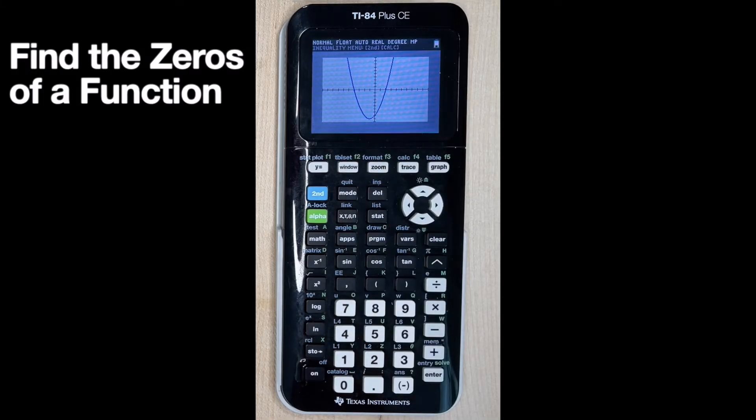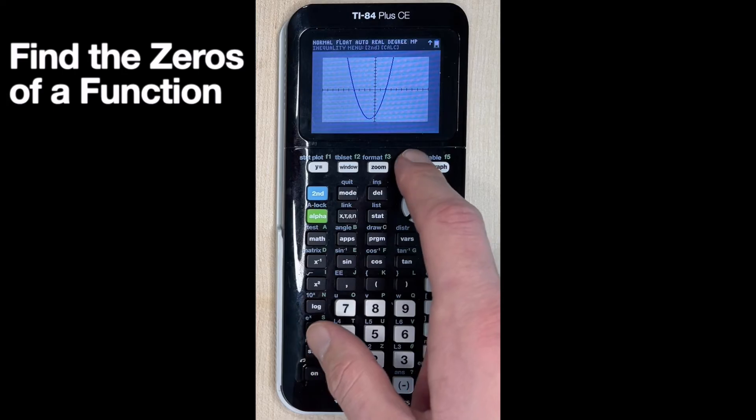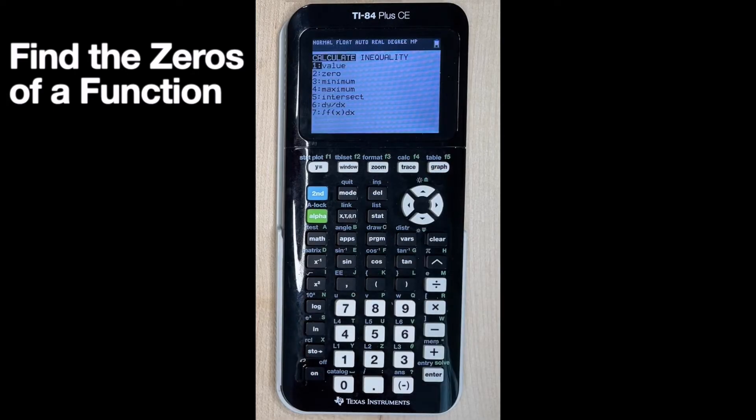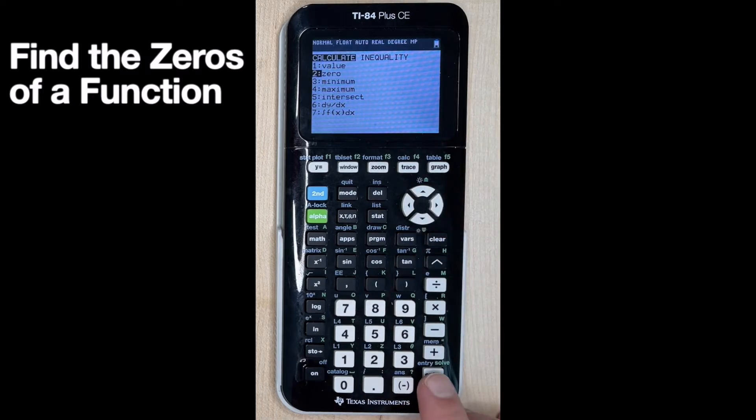So to find those, we're going to hit second and trace, because above trace we see these three letters, C-A-L-C, that means calculate. So let's hit second, trace, and now we see some options here. Number two is the one we want to choose, that's the zero. So we can go down to number two and hit enter to do that, or you can just hit the number two.